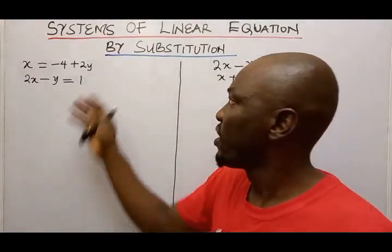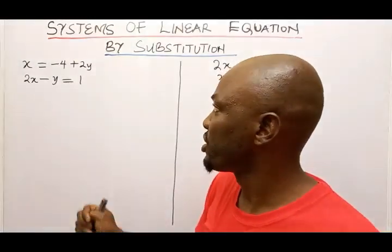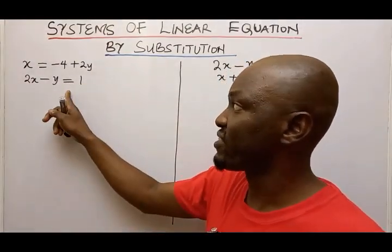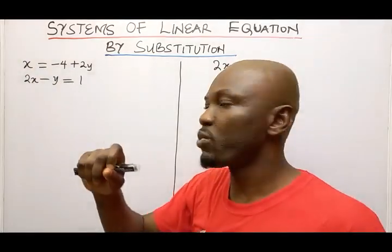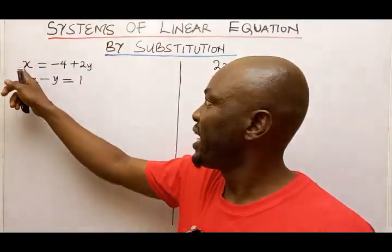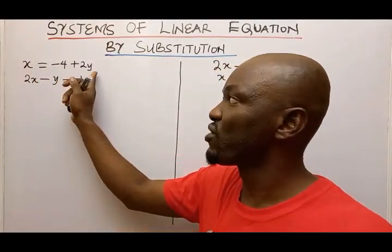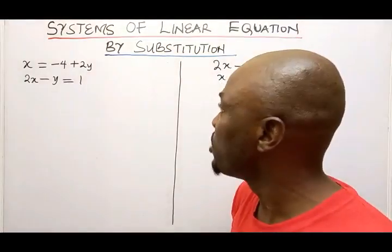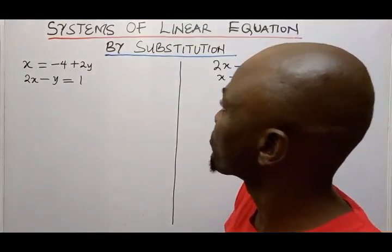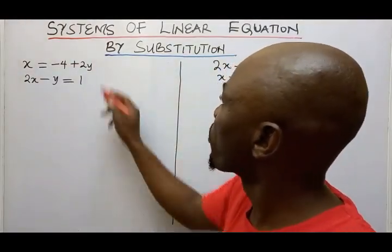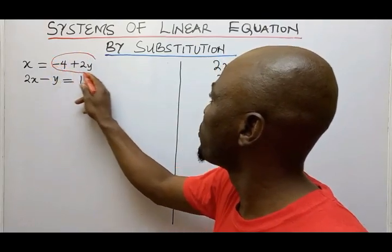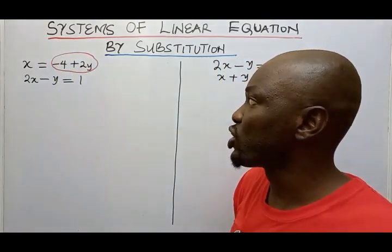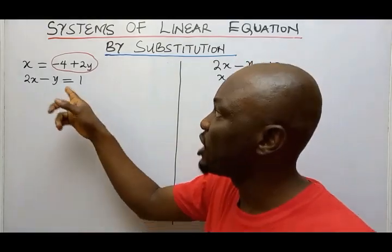Now if you look at this problem, there are two equations and they are simultaneous — this is the first and this is the second. If you look at the first equation, X is expressed in terms of Y, so that tells me that the X value is minus 4 plus 2Y.